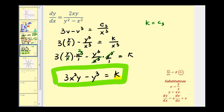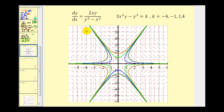Let's finish by looking at this graphically. We can generate a slope field using the original differential equation. For the general solution three x squared y minus y cubed equals k, I selected the values k equals negative four, negative one, one, and four, and graphed those functions. Each color below represents one of the solutions from the family of solutions. I hope you found this example helpful. We'll take a look at a third example in the next video.